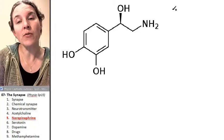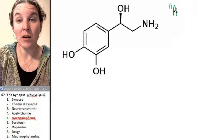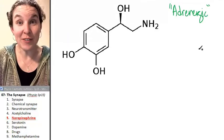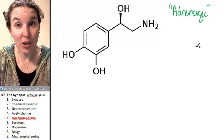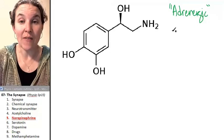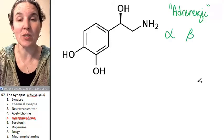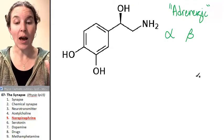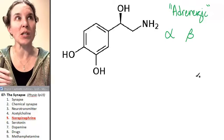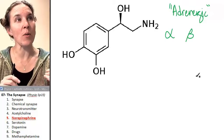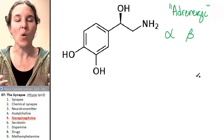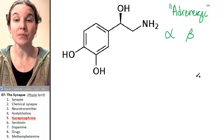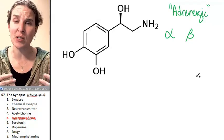Anything related to norepinephrine is going to be called adrenergic. You have different flavors of adrenergic receptors — you can have alpha receptors and beta receptors. We'll talk about these in more detail, but one of the ways that we can fine-tune the information or vary the responses to a single molecule is by having different receptors in different places.